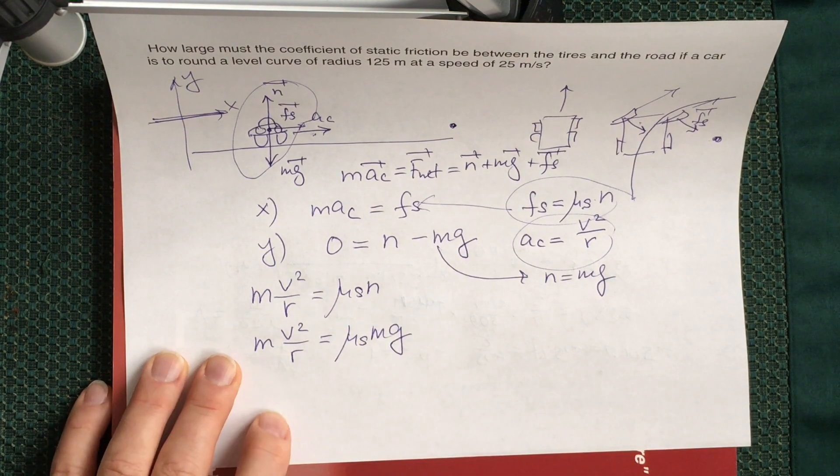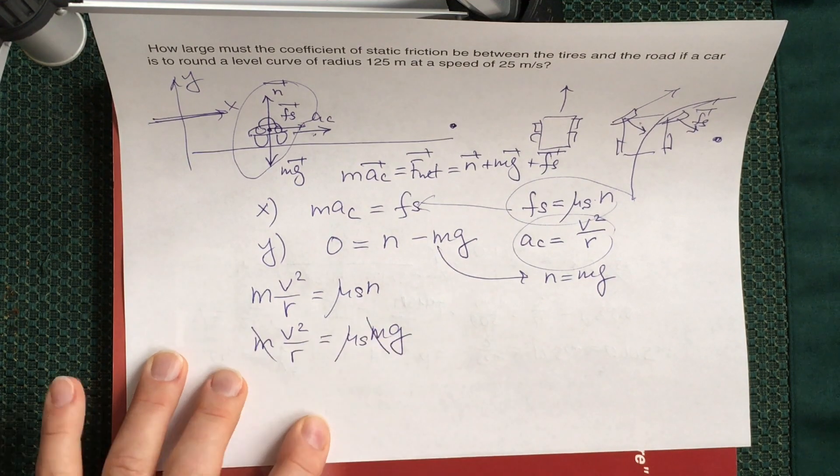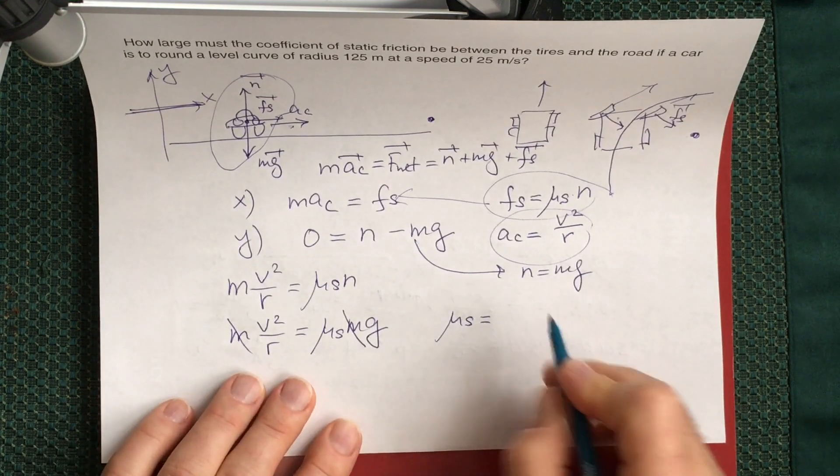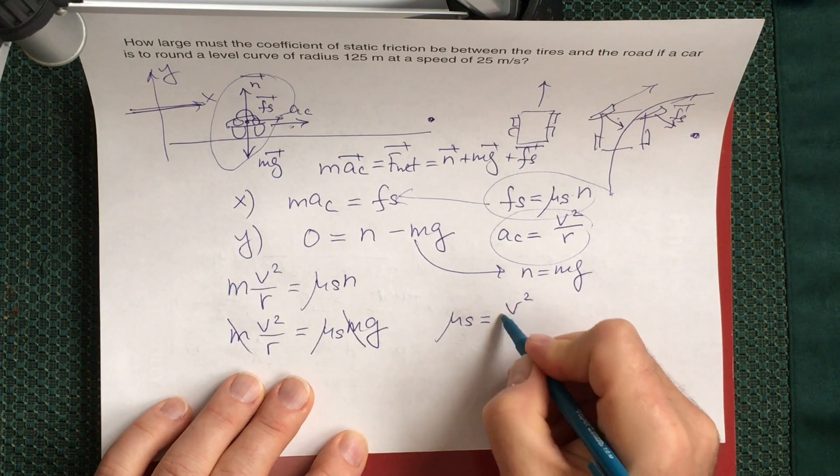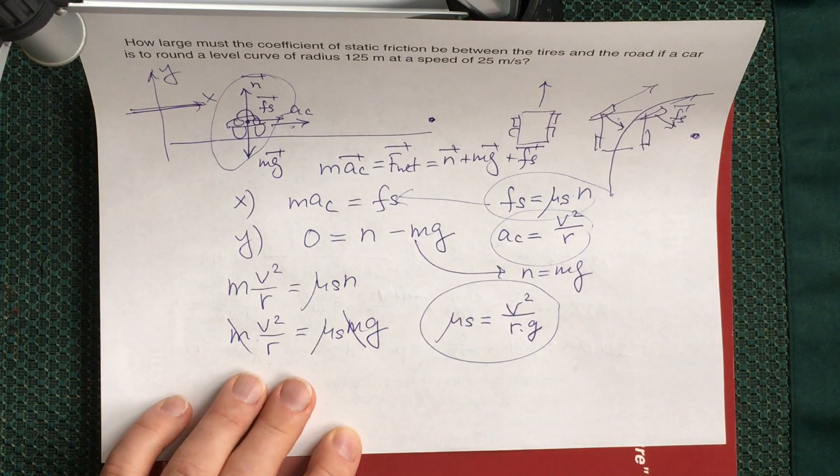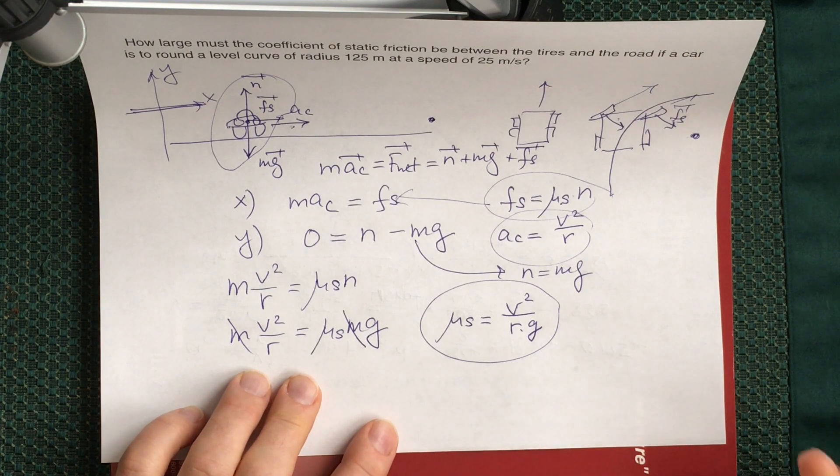So then you put instead of N mg, you have m v squared over R equals mu_s times mg. And you see that in this particular case you can cancel mass, and the expression for the static friction coefficient comes up as v squared divided by radius times gravity acceleration. This formula determines the value of the static friction coefficient and you just need to plug in numbers here.